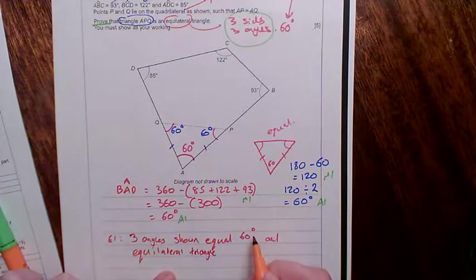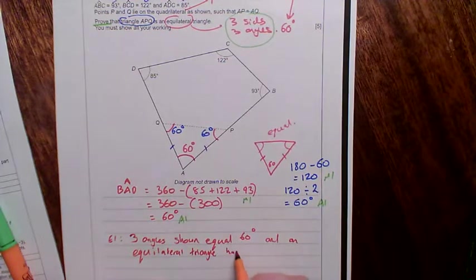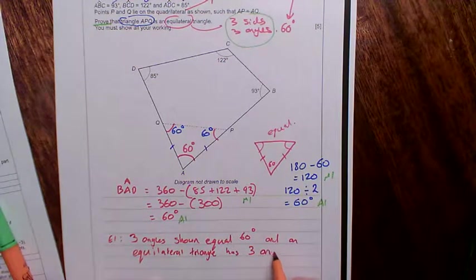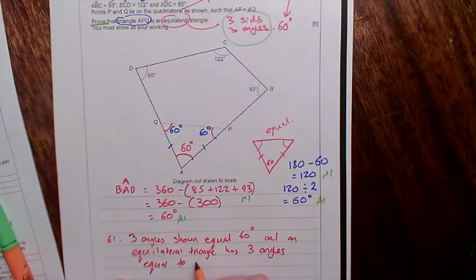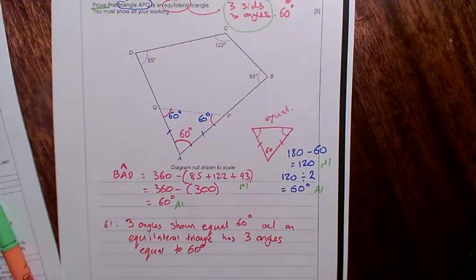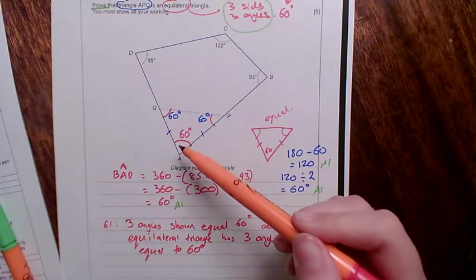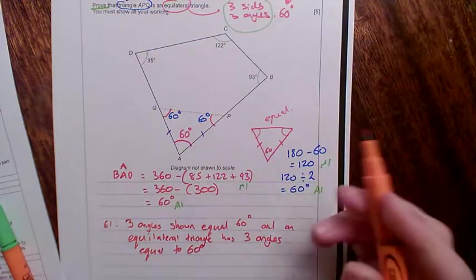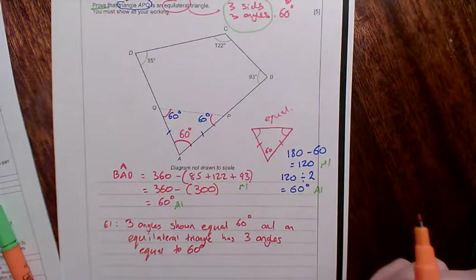So three angles shown equal 60 degrees, and an equilateral triangle has three angles equal to 60 degrees. So it's not enough to say that you've been told AQ and AP are equal, and therefore, you're just guessing that PQ is equal. That's not going to get you any marks. All right.